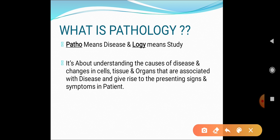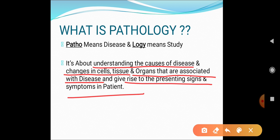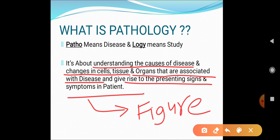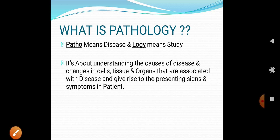In the scientific context, Robbins' book says pathology is about understanding the cause of disease — what is the cause of disease and the changes in the cell, tissue, and organs that are associated with the disease and give rise to presenting signs and symptoms in the patient. I will explain this in figure form later on.